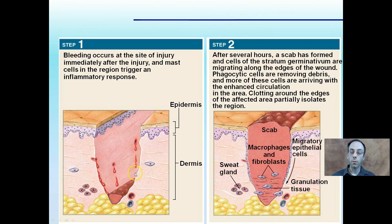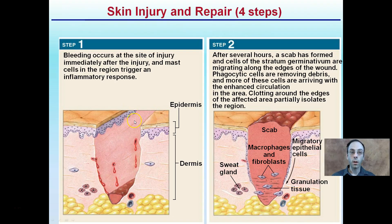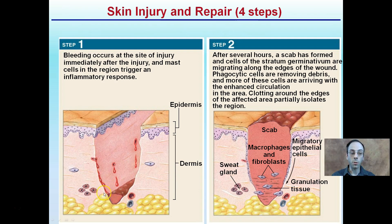So how does the skin go about repairing itself? Looking at a cut injury, bleeding occurs at the site of injury immediately after. The mast cells in the region trigger an inflammatory response. This cut goes deep into the dermal layer, so we've got bleeding occurring and cells rushing to the site. A bandage is placed over it to stop the bleeding. After several hours, a scab should begin to form as cells migrate to the edges of the wound.